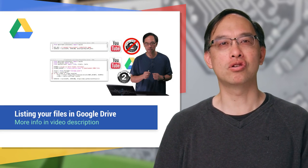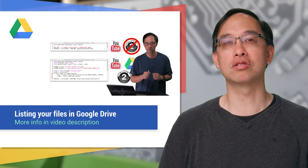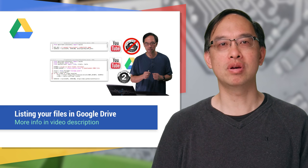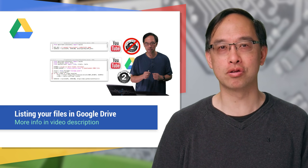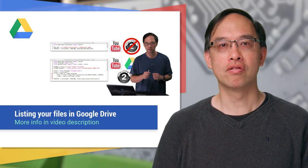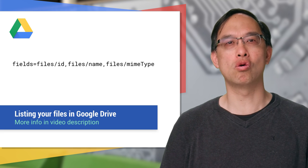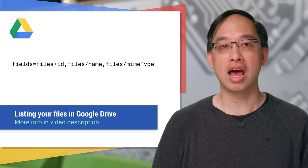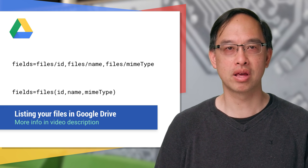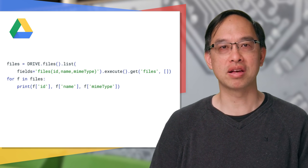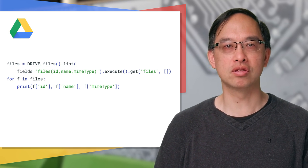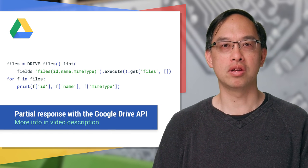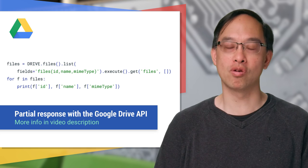Moving on, in another video we showed you how to display the first 100 files and folders in your Google Drive, but didn't filter the response. We can use these field mask values so only the IDs, file names, and mime types come back in the response. As before, we can also group with parentheses. Here's Python code that uses a field mask to get and display these three fields for each of the 100 files. The Drive API docs also has a page on partial response and other good performance practices.